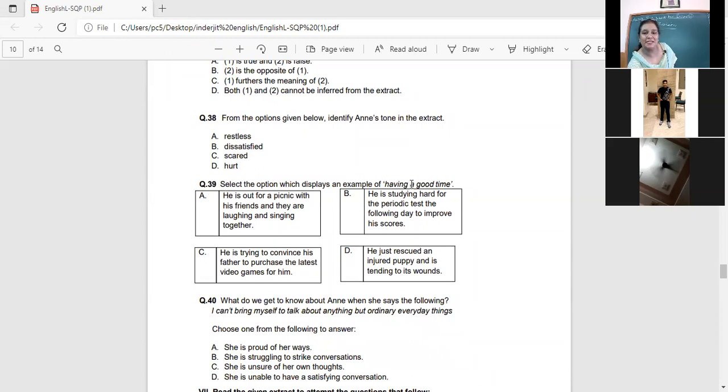Now select the option which displays an example of having a good time. Having a good time means I had a good time with my friends in the picnic. So he is very successful having a good time in his life. Look at the options now. First of all, try to find out what is the meaning that they are having a good time. He is out for a picnic and they are laughing and singing together. Yes. He is studying hard. He is trying to convince his father to purchase. Is it a good thing trying to convince? He just rescued an injured puppy and is sending. Is he having a good time taking care of these injured puppies? He is kind, he is concerned. Which is the correct option? A is the correct option. Things that you enjoy doing when you are happy.